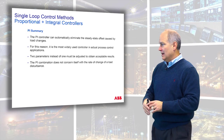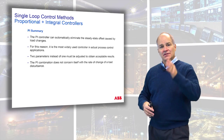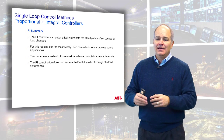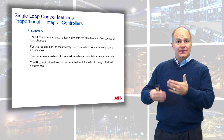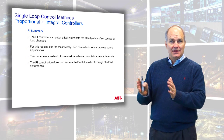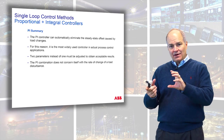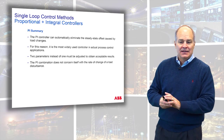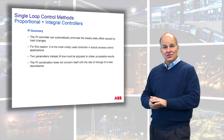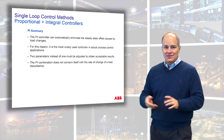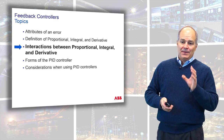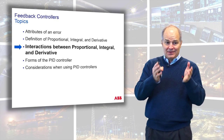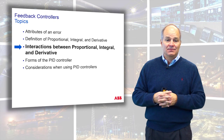PI doesn't concern itself with rate of change. Derivative, when added to the mix, acts as a lead. I've used it when there's a known limit cycle - you can adjust the output, like changing the timing on a car engine. That's an advanced use of the PID algorithm and most of the time it's not needed.